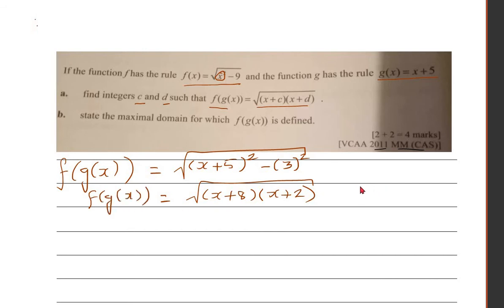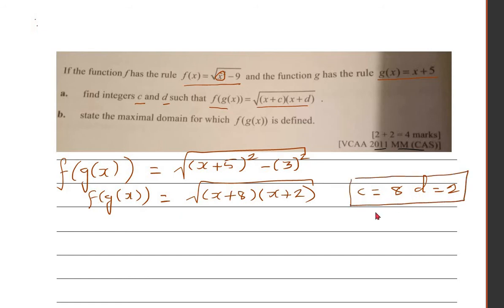From this result, we can say c is 8 and d is 2. That will give you two marks. Now the next part says: state the maximal domain for which this is defined.